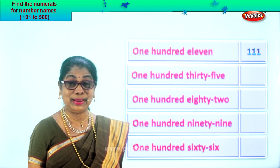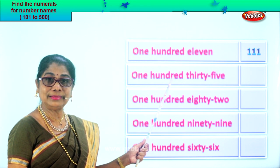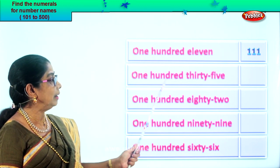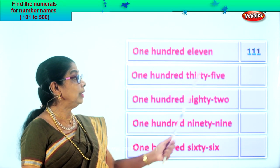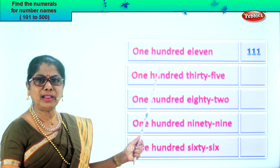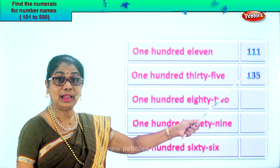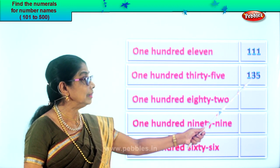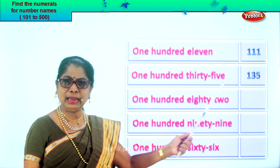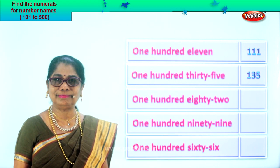Let's take the next number name and find the numeral. One hundred thirty-five. Thirty-five. You had one hundred eleven; here it's thirty-five. So how will you write one hundred? Then you put thirty-five. Very easy, isn't it? Remember the place value: one, ten, hundred. One hundred we have; next number given is thirty-five. One hundred thirty-five. When you read this numeral and the number name, it should be the same — one hundred thirty-five. That's how we check.